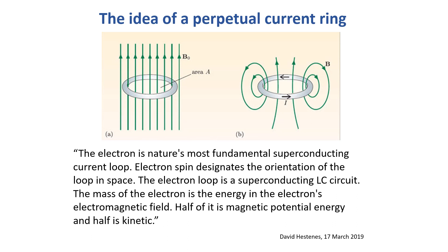However, David Hestenes revived the idea in the 1980s and got some worthy followers who further developed it. There are various interpretations of the interpretation, which I think of as complementary. Hestenes's interpretation of the Zitterbewegung is that of a current ring — literally, a perpetual loop of electric current. The perpetual loop of current is not weird at all; it naturally occurs in zero-resistance conductors.